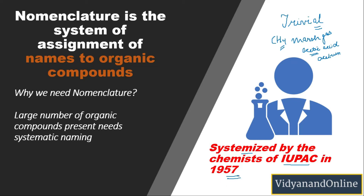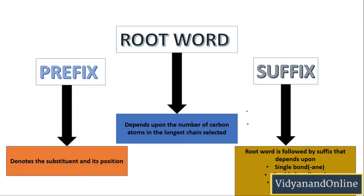Now let us see how we do the naming of organic compounds using the IUPAC system. Whenever you have to name any organic compound, first you will check for the root word. The root word depends upon the number of carbon atoms in the longest chain selected. You will check which is the longest chain and that gives you your root word.